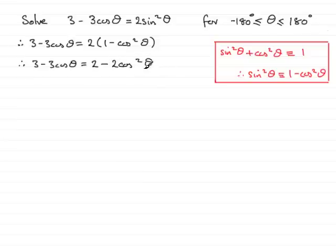Now, what we've got is a quadratic equation in terms of cos theta. And so, what we need to do is to rearrange this to make it equal to 0. So, I'm going to add 2 cos squared theta to both sides and also subtract 2 from both sides. So, what that's going to give me is 2 cos squared theta, then I come in with the minus 3 cos theta, and then 3 take away the 2 gives plus 1 and that equals 0.